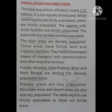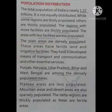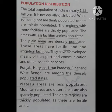Let us know how the population of our country is distributed. The total population of India is nearly 1.22 billion. It is not equally distributed. While some regions are thinly populated, meaning very few people live there, others are thickly populated, meaning the number of people staying is high. The regions with more facilities are thickly populated, and the areas with less facilities are less populated.